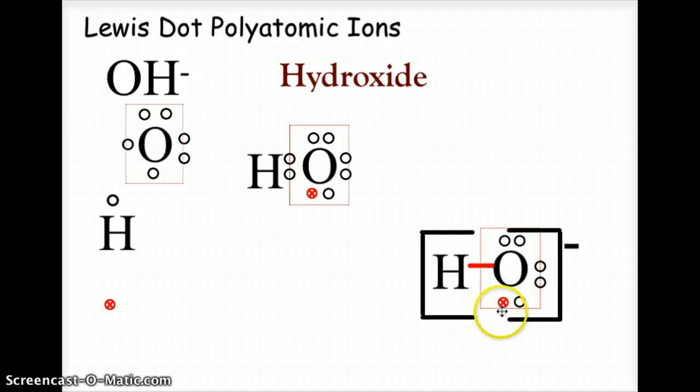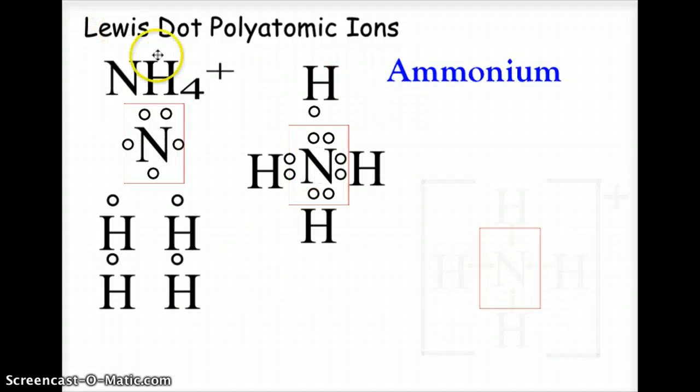Let's look at a positive polyatomic ion, ammonium. Ammonium is NH4+. When we look at nitrogen having five electrons and each hydrogen has one electron, we know that three hydrogens will fill the necessity for that nitrogen atom. This is how ammonia is formed, but here we have that additional hydrogen that's going to be added.